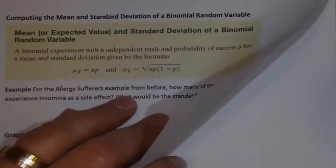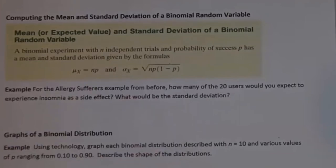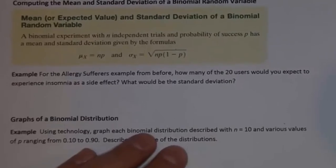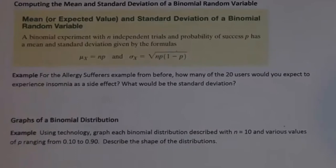We have a couple of items in section 6-2 to cover: the mean and standard deviation of binomial probability distributions, and graphs of binomial probability distributions. In chapter 5, we had a formula for finding the mean and standard deviation of a discrete probability distribution, which we could use for binomial distributions. But there's a shortcut specifically for binomial probability distributions.